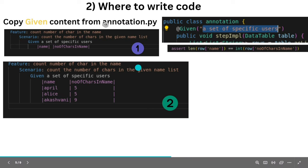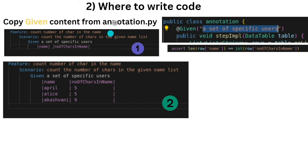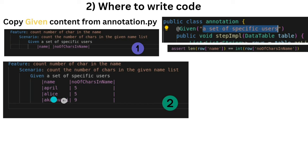Now we have to write the code in cucumber.feature. Open annotation.py — you will find the given content there. But first, write the first two lines of code manually. The problem statement involves three names: two names of five letters and one name of nine letters. We need to write the feature file so it accepts both Python and Java code.